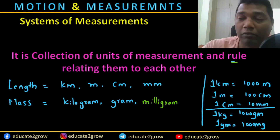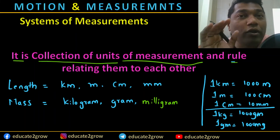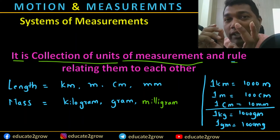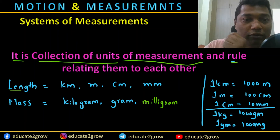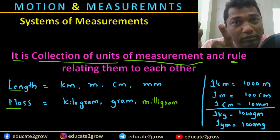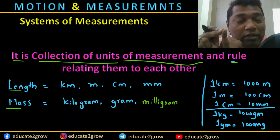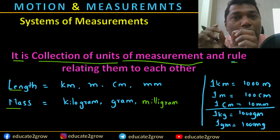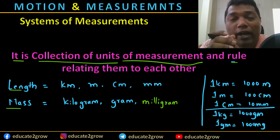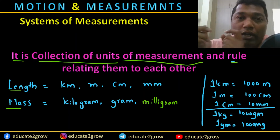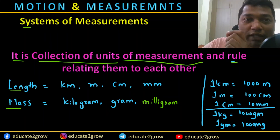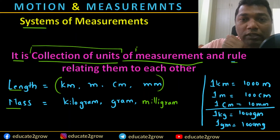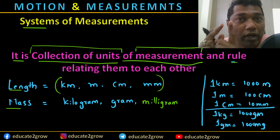Let me read the first statement — a collection of units of measurement. We have several fundamental units, several physical fundamental units, and derived units. Considering two examples: one is length and one is mass. The length can be expressed in different units — kilometer, meter, centimeter, and millimeter. All these are units for length and they give the value of what the length is.